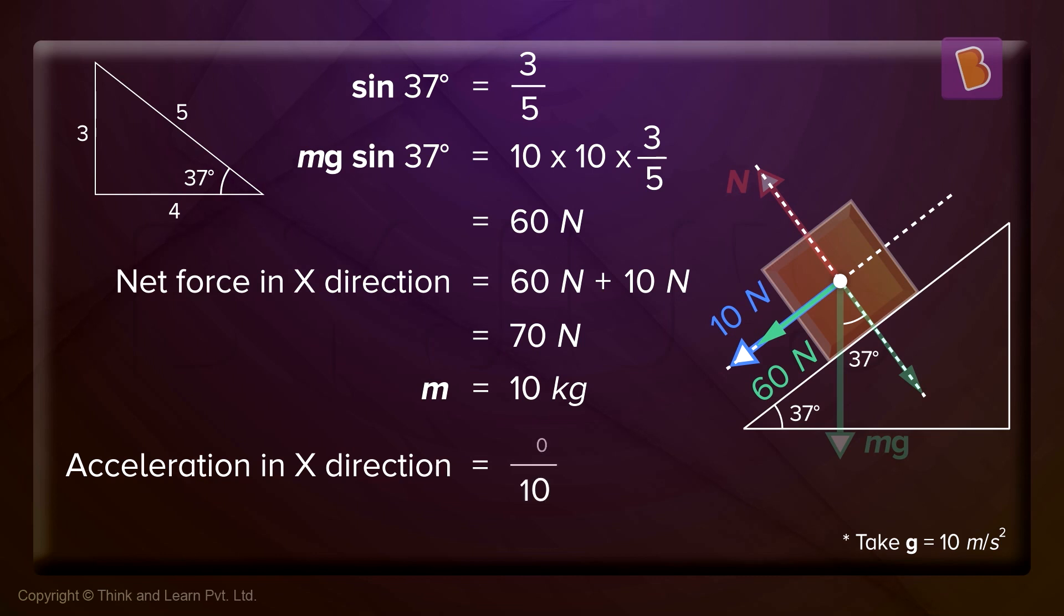easy, right? 70 divided by 10, that is 7 meters per second square.